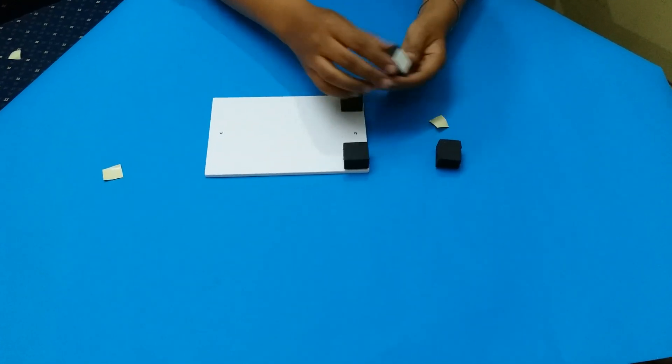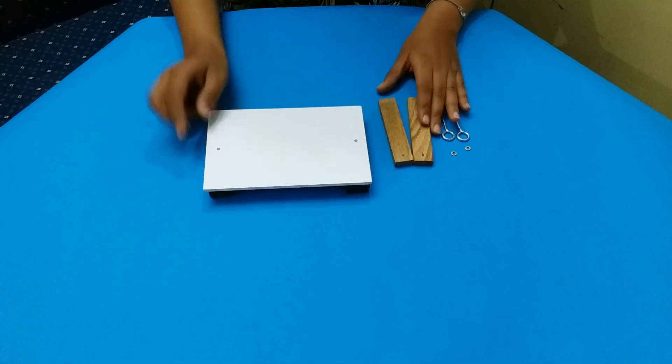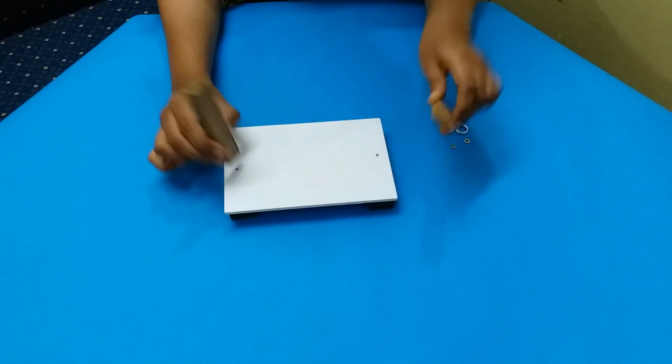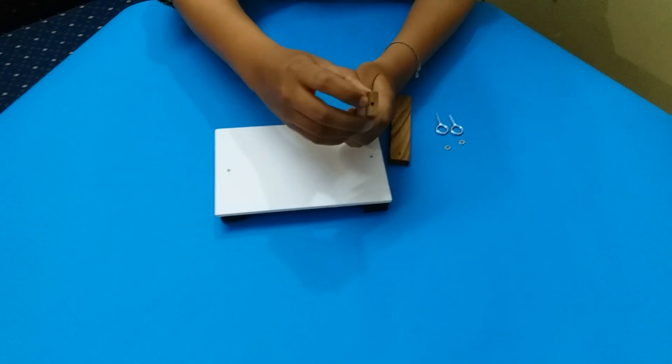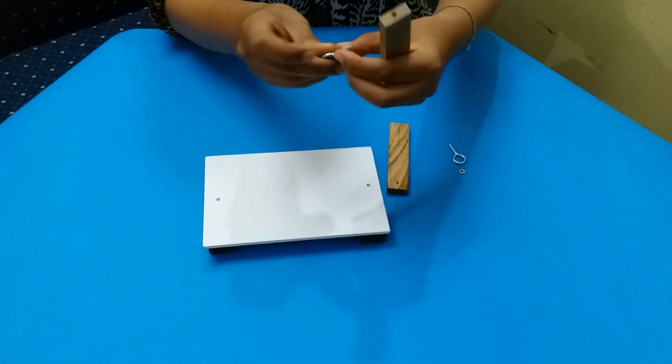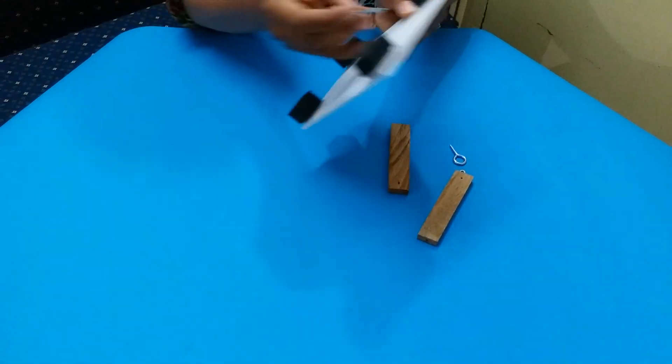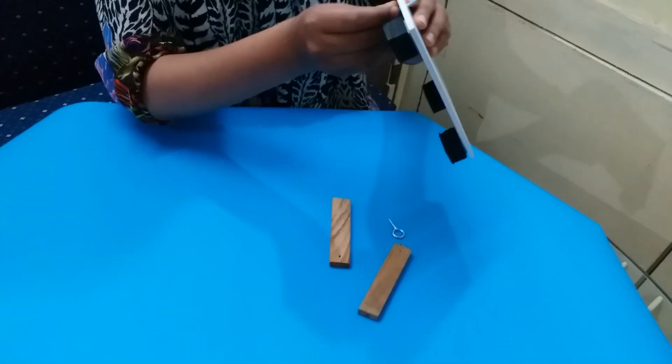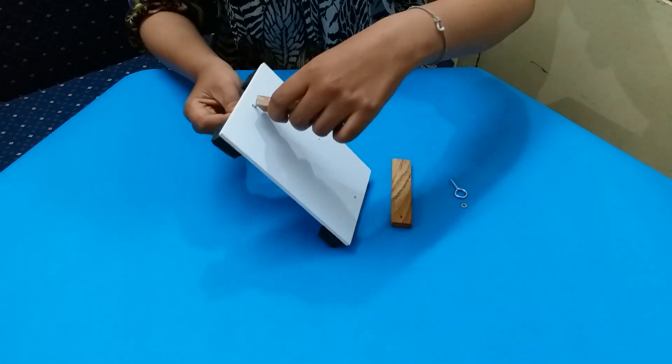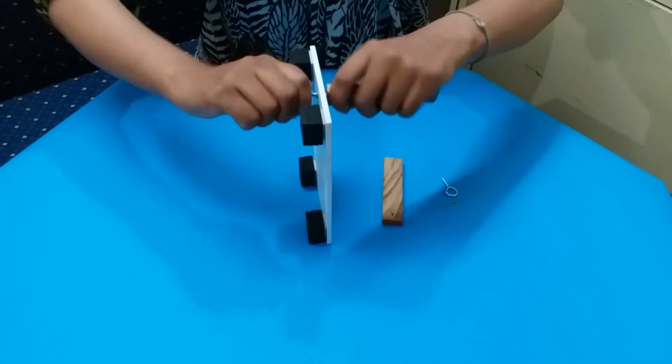In the next step, you have to fix these battens on the sunboard. Look at this hole on the batten, take the hook, put the washer from the downside, insert the hook and fix the batten. Similarly do it for this other batten. Remember to put the washers.